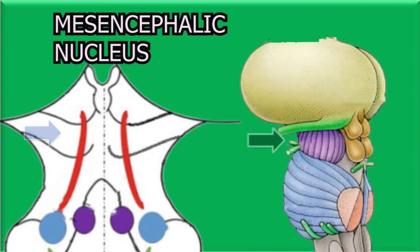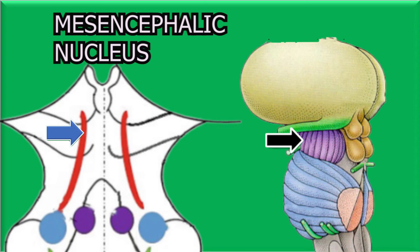Starting with the mesencephalic nucleus, it is seen at the level of the midbrain. This nucleus is a unique structure because it is the only structure in the central nervous system that contains the cell bodies of first-order sensory neurons. The first-order sensory neurons are not seen in other parts of the central nervous system but are seen here, and so the mesencephalic nucleus is sometimes considered functionally as a sensory ganglion that is located within the brainstem.